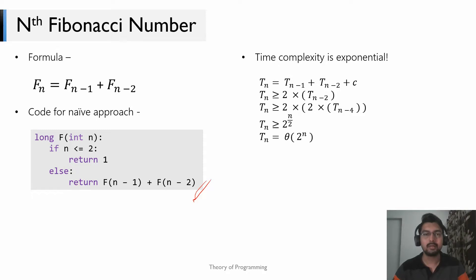We are counting down to n in steps of two, so the total number of steps is n/2. Therefore T(n) is at least as big as 2^(n/2), which means the time to compute the nth Fibonacci number is Θ(2^n) — that's exponential.